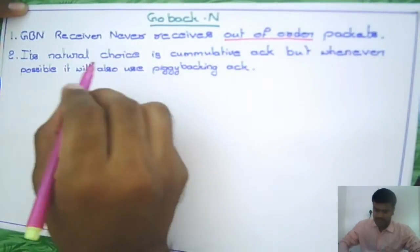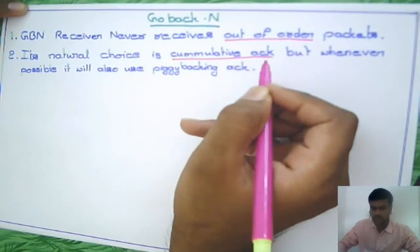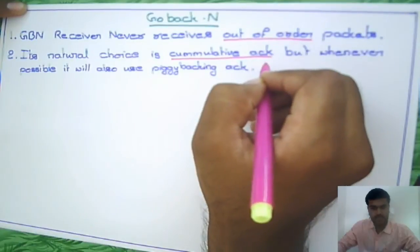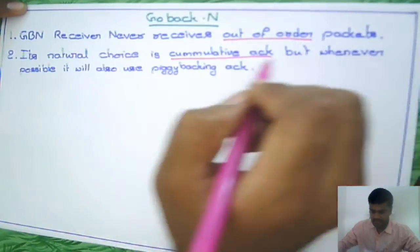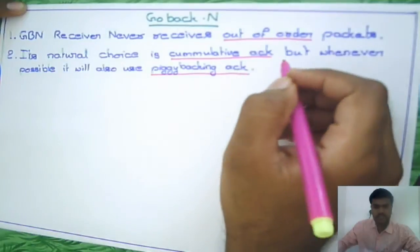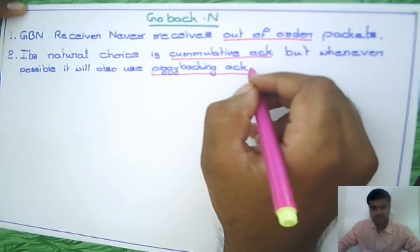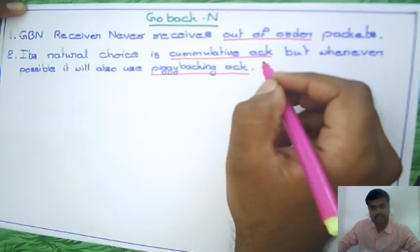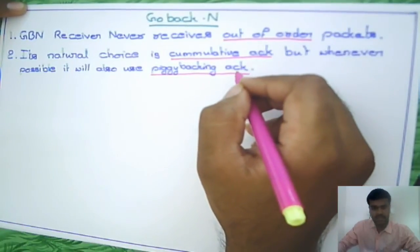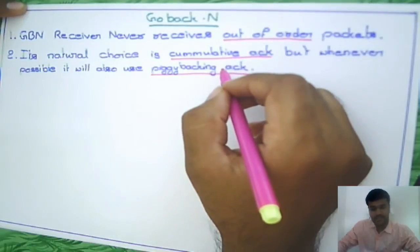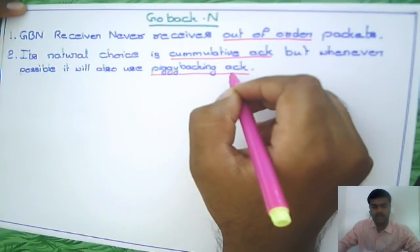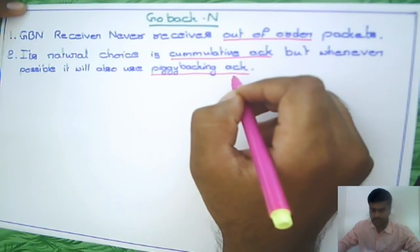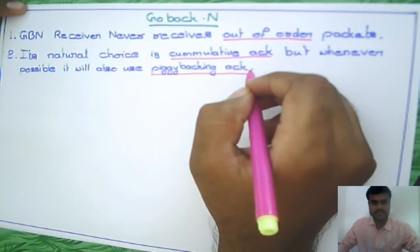The second characteristic is that it gives cumulative acknowledgement, meaning it gives acknowledgement for a group of packets. Whenever required, it will also use piggybacking acknowledgement — suppose by the time it is giving the acknowledgement, it needs to send some data to the sender, so together it will send the data and the acknowledgement for the previously received packets.